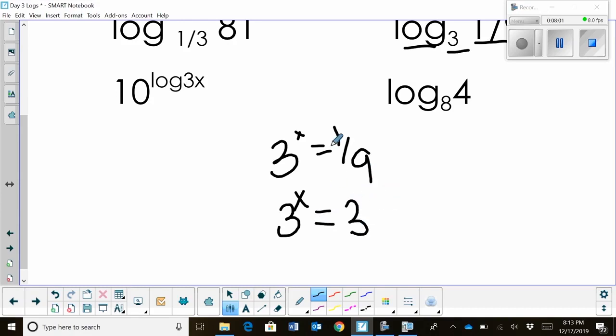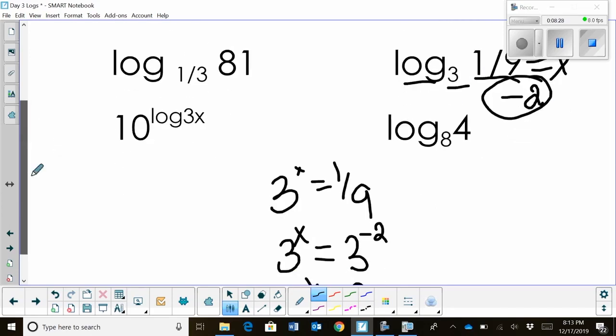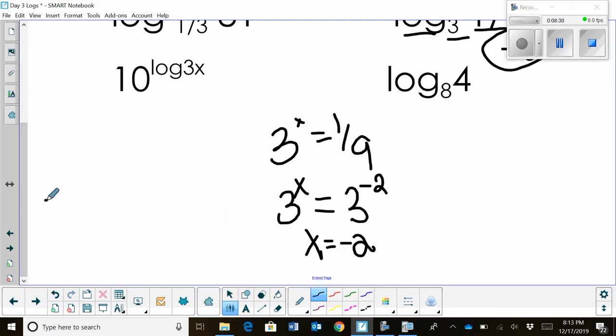So 3 is already a good base, and I can rewrite 9 or 1/9 as 3 to the, okay, second power, but it's the reciprocal. So it's the negative second. So that means x is negative 2. So that means I simplify log base 3 of 1/9. That's just equal to negative 2. It's the reciprocal. That's 3 to 1/9. This would be a reciprocal. So it's negative, and then 3 squared is 9.